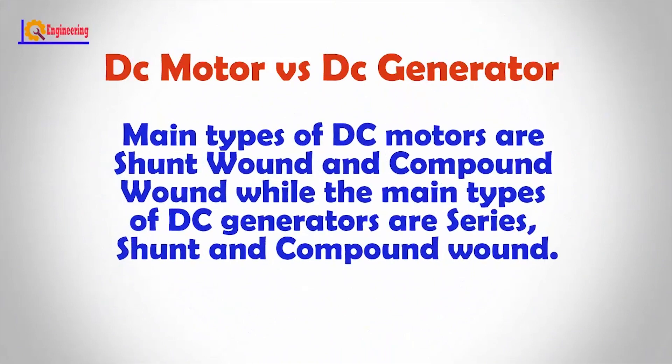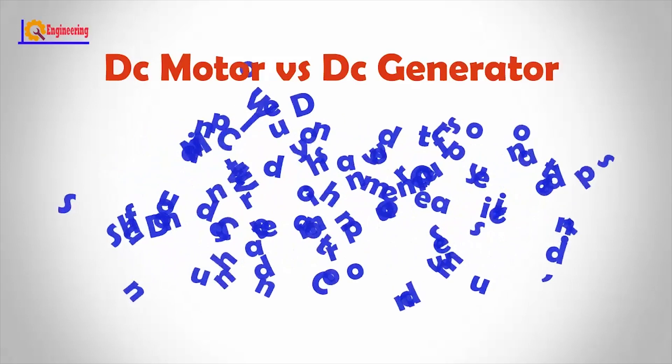Main types of DC motors are shunt wound and compound wound, while the main types of DC generators are series, shunt and compound wound.